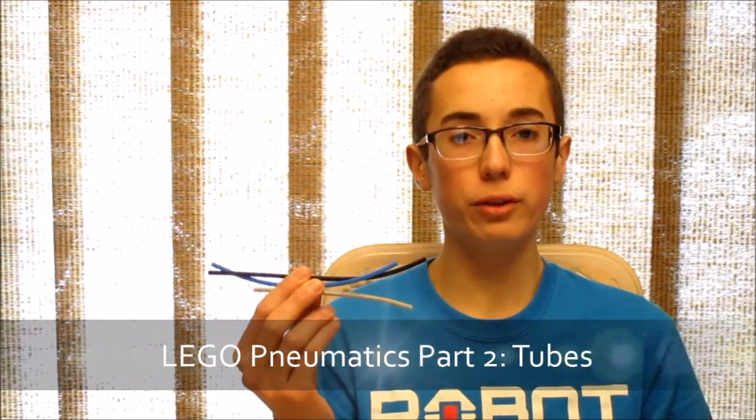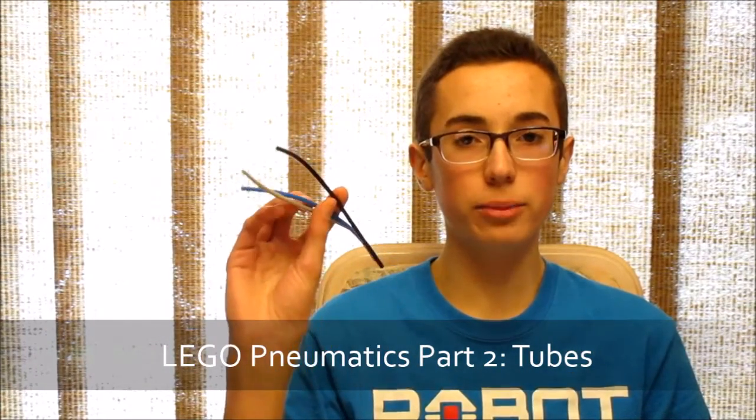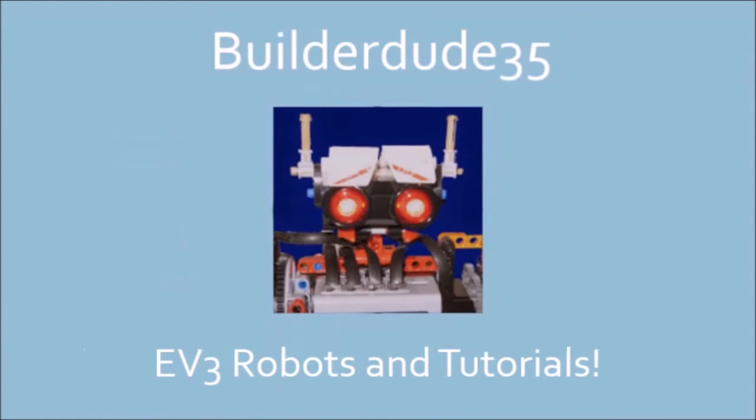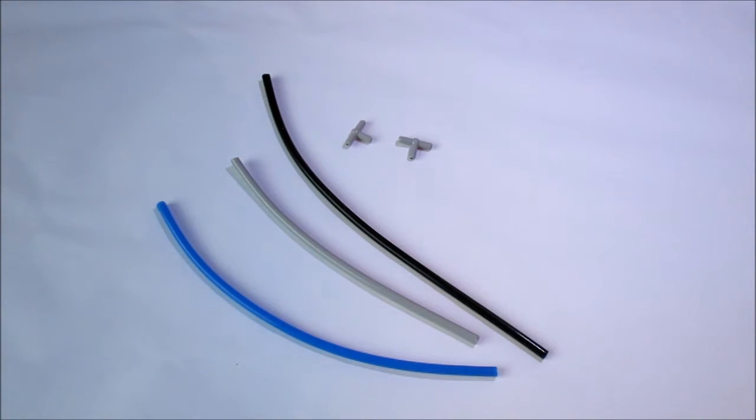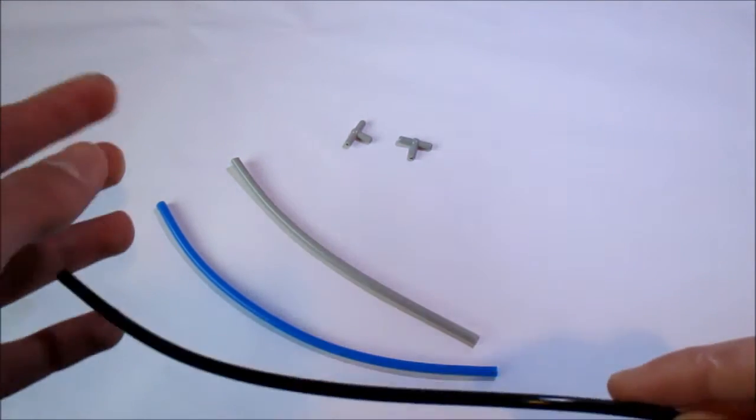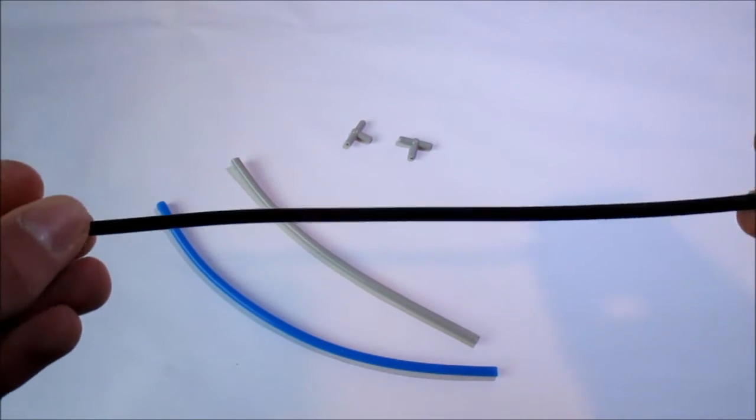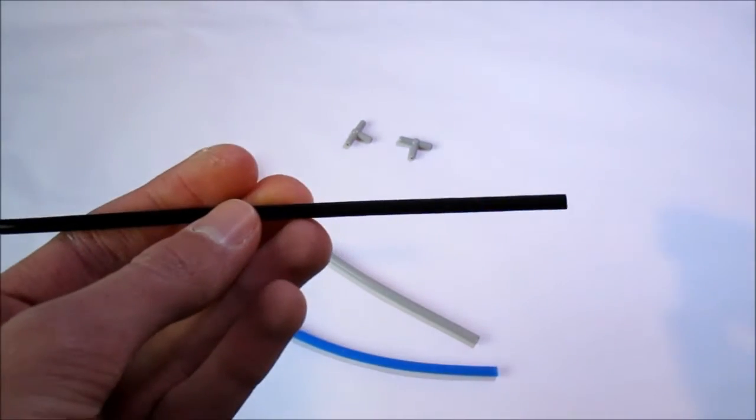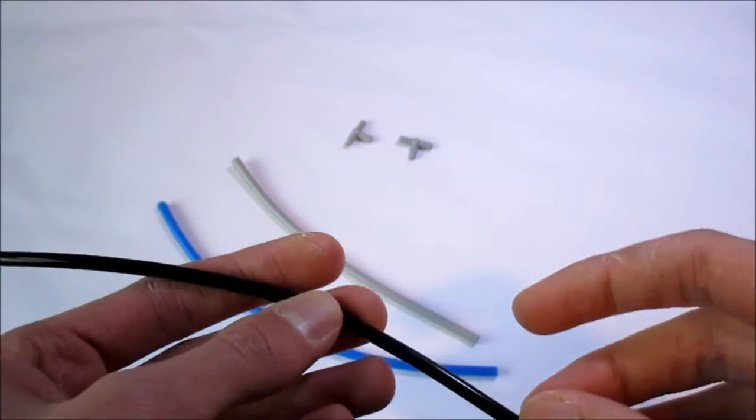BuilderDude35 with Part 2 of Pneumatic Systems on Pneumatic Tubing. So for the second video in the series we have tubes and these are really self-explanatory. What these do is they're the objects that are physically going to move the air through your pneumatic system.